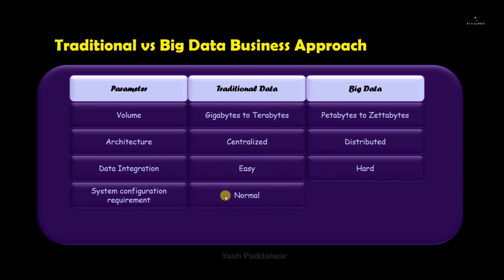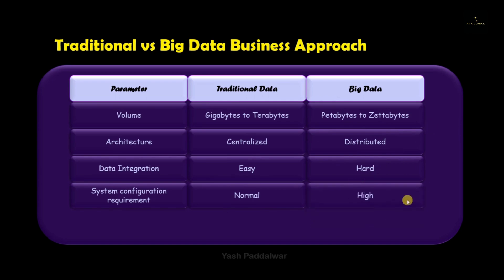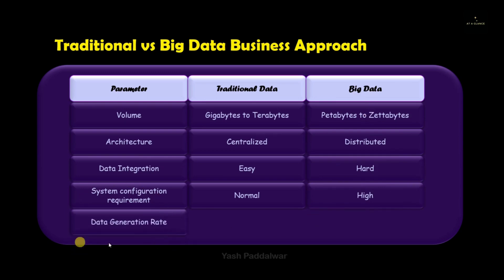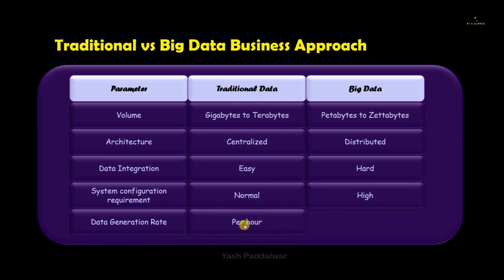The next parameter is system configuration requirement. In the traditional data approach, the system configuration requirement is normal because the data is less and processing is less, so high system configuration was not required. But in the big data approach, system configuration has to be high because we are dealing with all types of data.